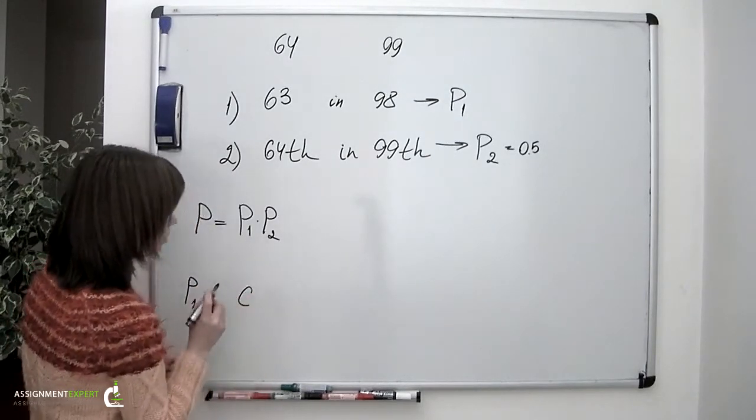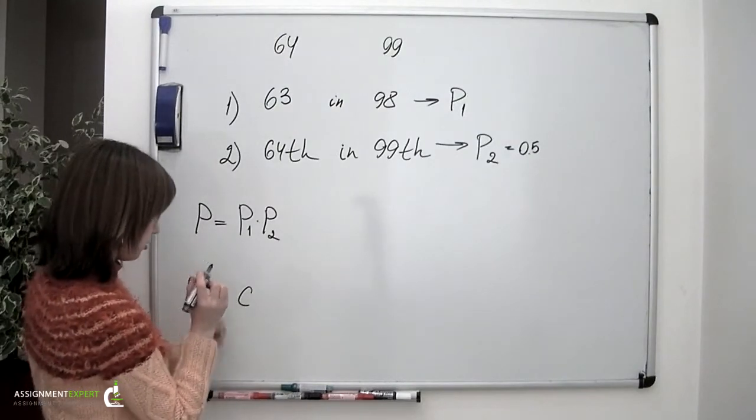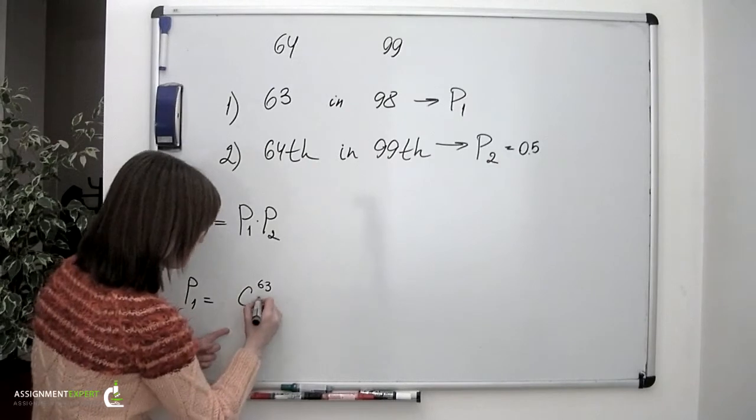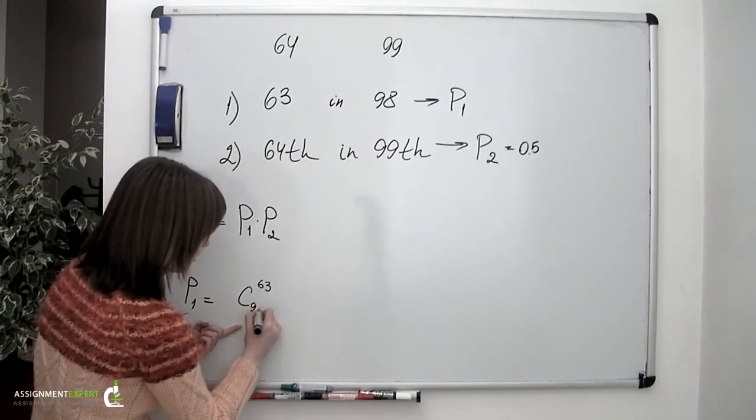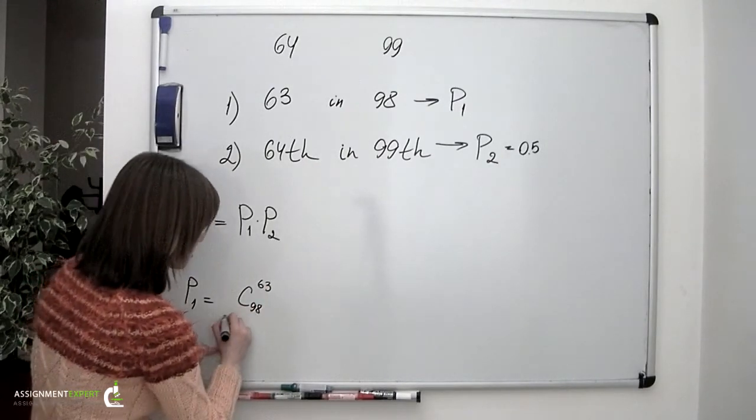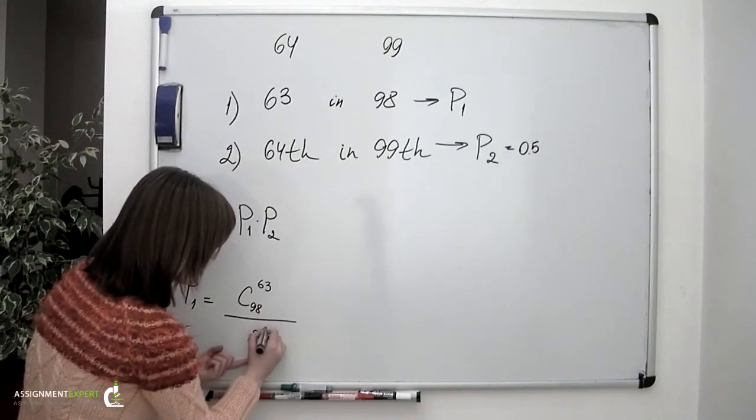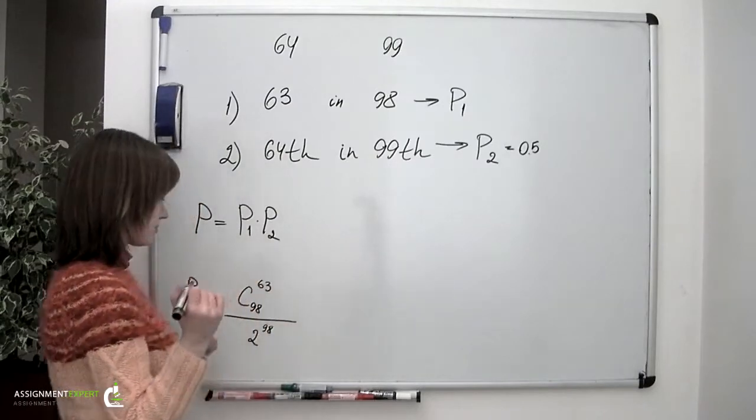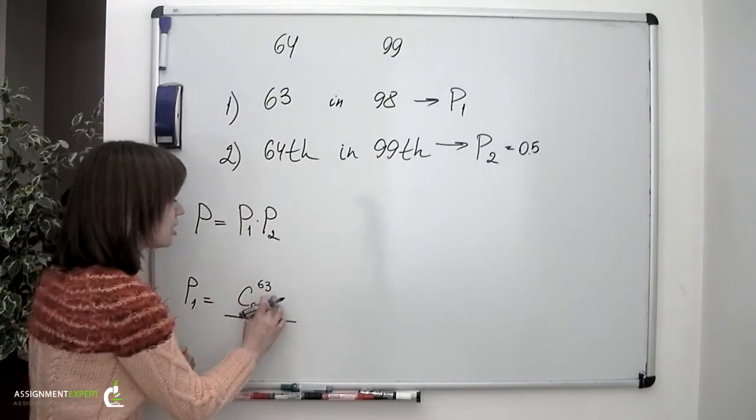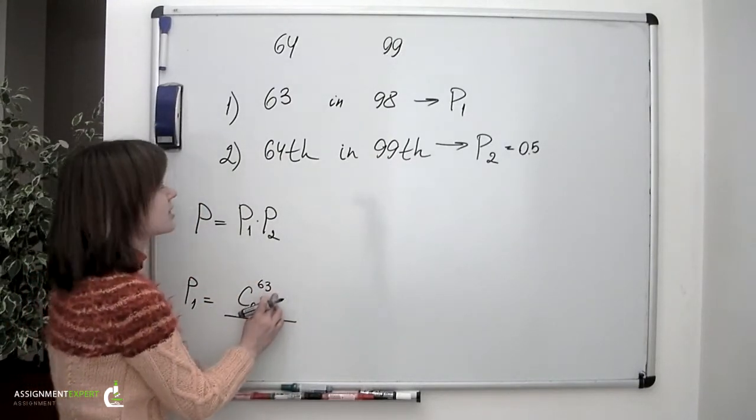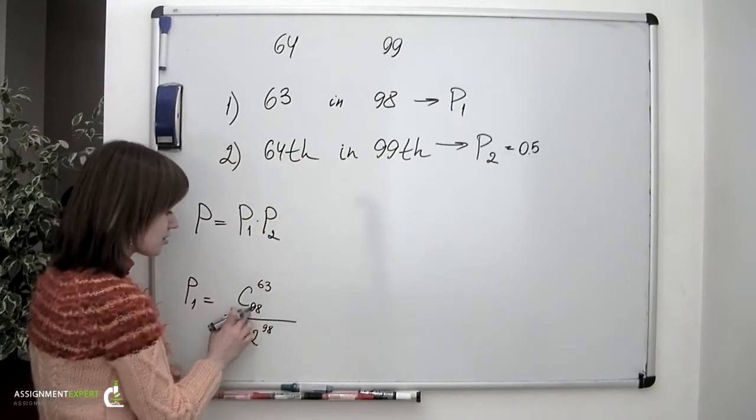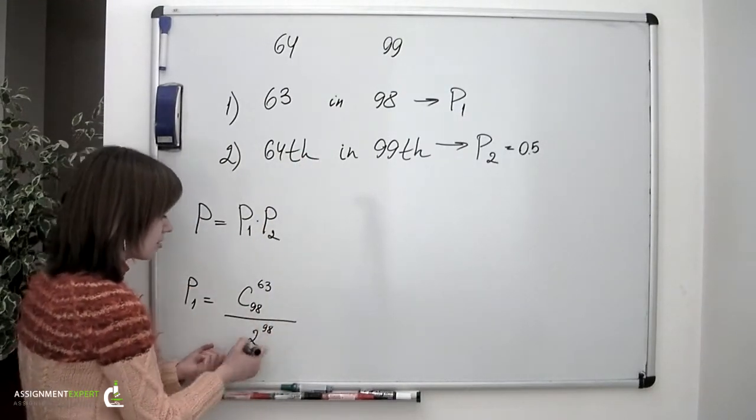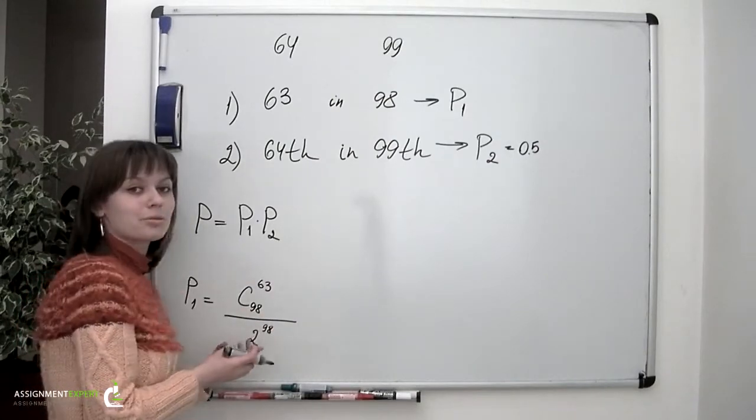We go combination of 63 successes out of 98 trials divided by 2 taken to the 98th power. So again, we already have 63 heads in 98 tosses and this denominator here says that this number is the total amount of outcomes.